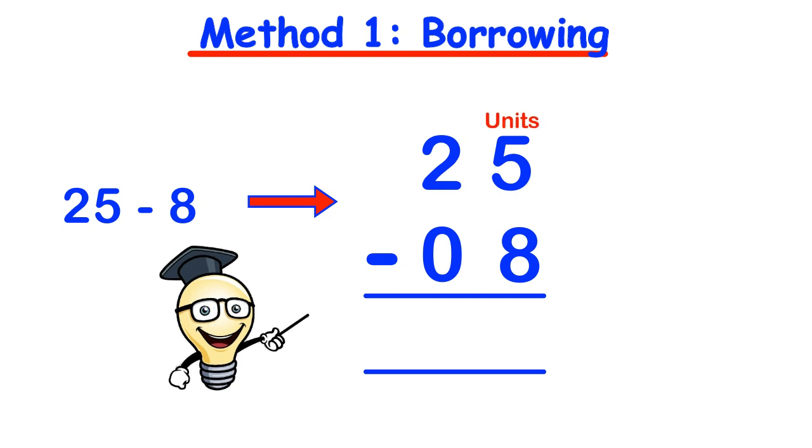What we normally do is start from the right hand side or the unit side and we check to see if the top digit or the top unit is bigger than the bottom unit. In this case, 5 is not bigger than 8. And this cannot be done unless we go into negative numbers. But that's the second method we'll be looking at. So to avoid going into negative numbers, since 5 cannot take away 8,